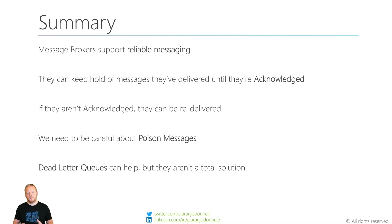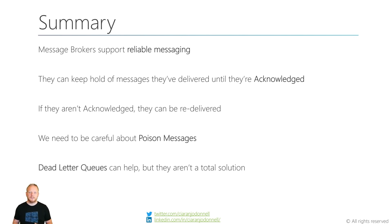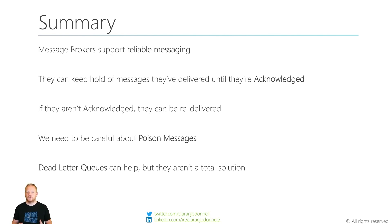In summary, we learned that message brokers do support reliable messaging. They can hold on to messages until they've been acknowledged; if they aren't acknowledged then they can be re-delivered to the same receiver or a new receiver that connects. But we have to be careful about poison messages - something wrong with the message that causes us to fail repeatedly. We need to make sure we don't fail when we receive the messages and we need to figure out what to do with the message if we can't process it. Dead letter queues are a message broker feature that can help, but they aren't a total solution. We still need to decide who gets to subscribe to the dead letter queue, what we do with the messages that end up there, and how we recover our business transactions from those kinds of failures.